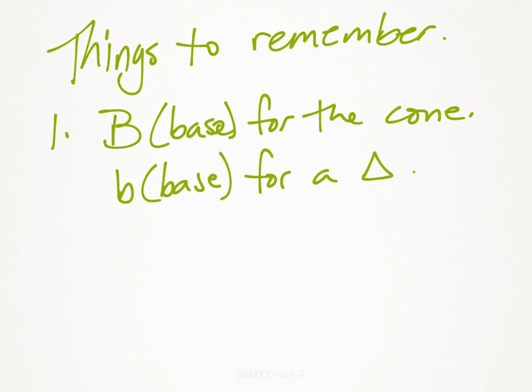So just a few things to remember here. The big B is going to represent the base for the cone or the pyramid until you replace it with the formula for the area for that shape.